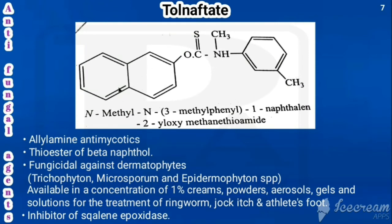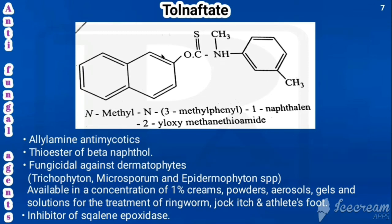The next drug is tolnaftate. Its structure also has naphthalene, and in the second portion of naphthalene there is O-C(=S)-NH-CH3 and a phenyl group bearing a methyl (methylphenyl). By replacing methyl and methylphenyl with hydrogens, we get O-C(=S)-NH2. Compared to an amide (O-C(=O)-NH2), here oxygen in the carbonyl is replaced by sulfur, making it a thioamide. The chemical name starts with naphthalene-2-yl as the parent, with 2-YL-oxy for the carbon giving methanethioamide.